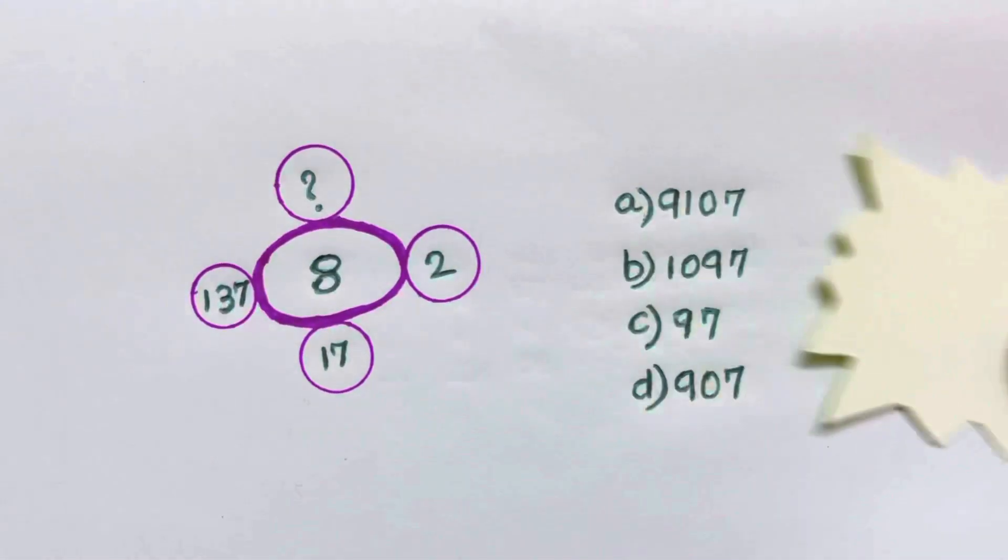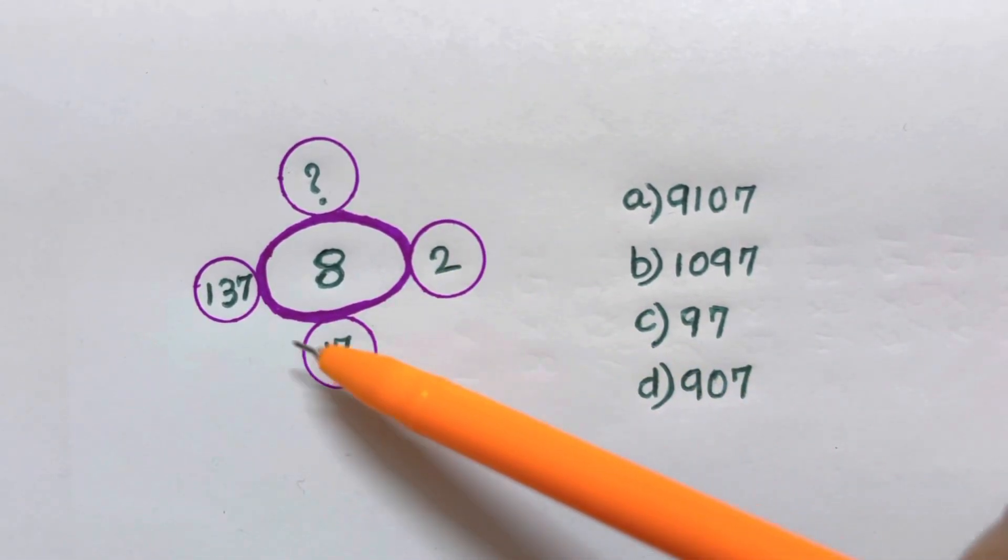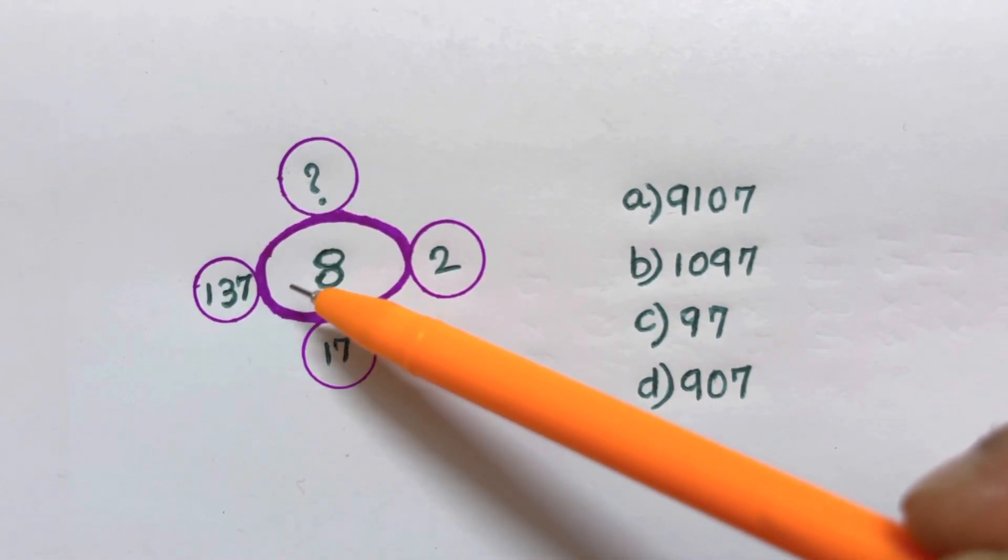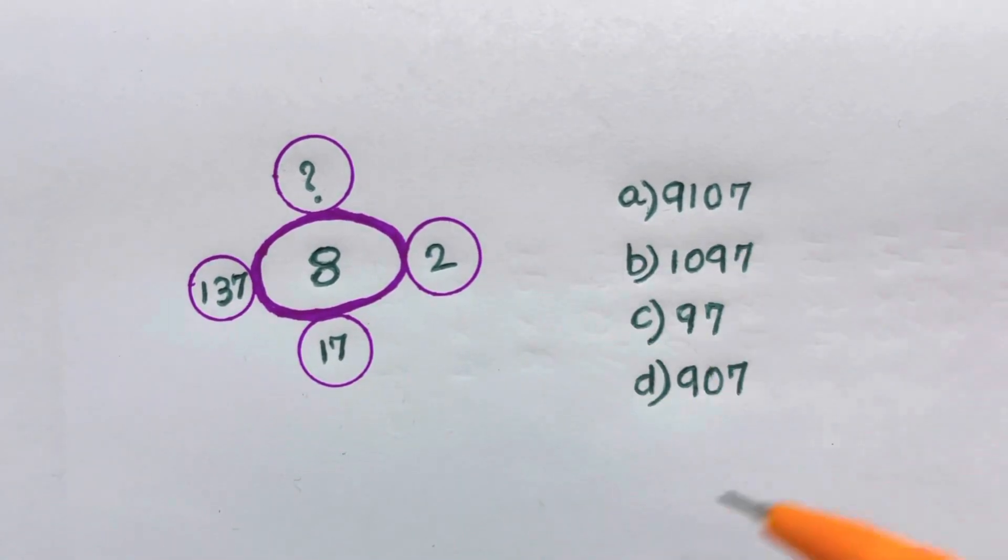So let us move on to our puzzle and let's see what it has. You have three numbers here: 2, 17, 137, and 8. There are four options given to you. You have time for 15 seconds to solve this, and your time starts now.